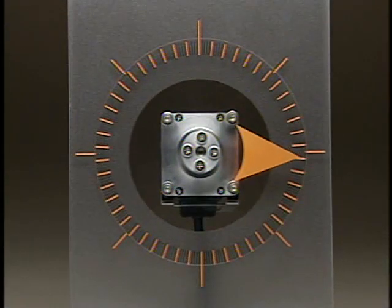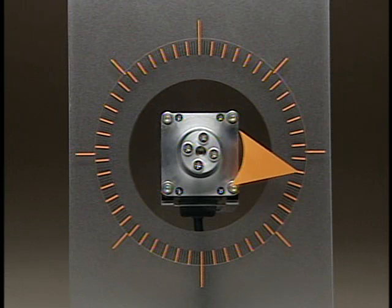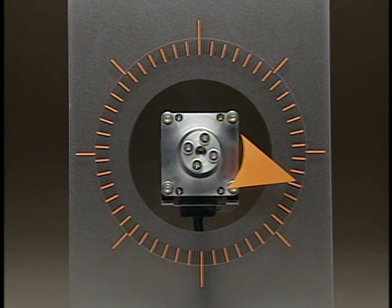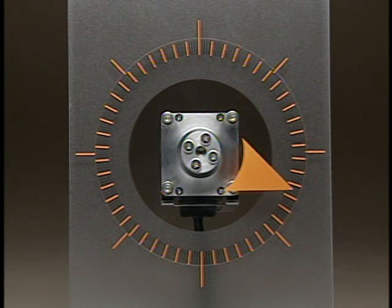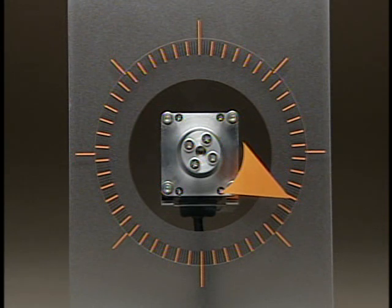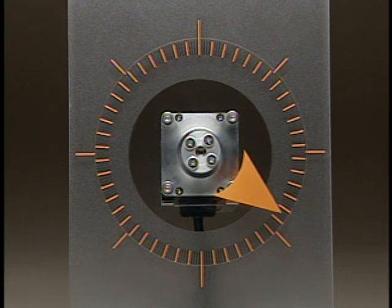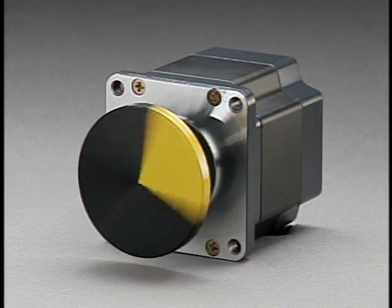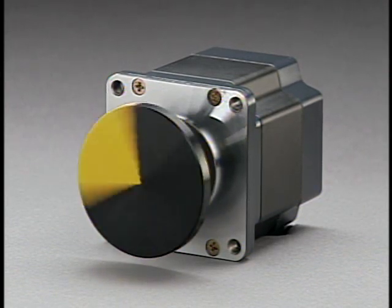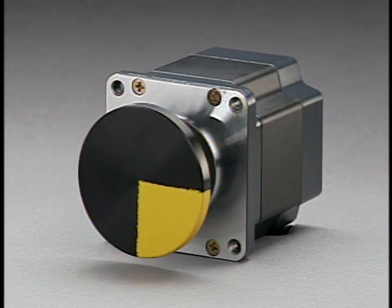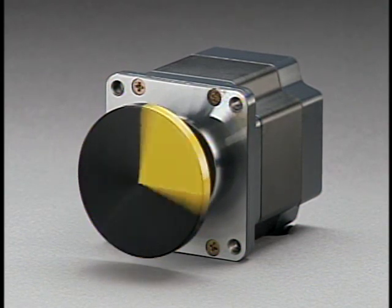The stepping motor's structure allows an exact rotation of 0.72 degrees when mechanical displacement is provided in the stator and rotor by switching the coil excitation. This is why the stepping motor provides high precision and high resolution positioning by the motor itself without a sensor.